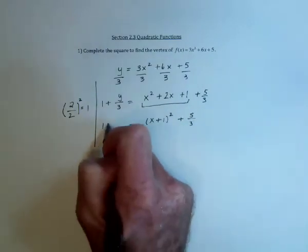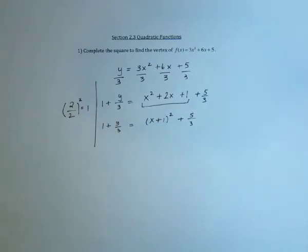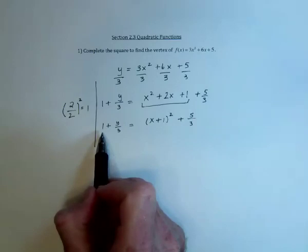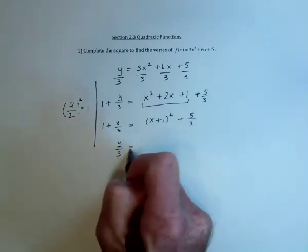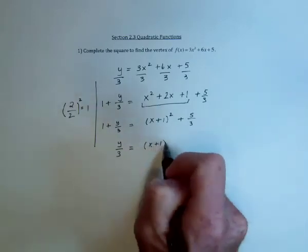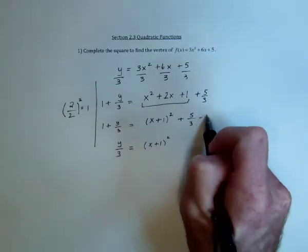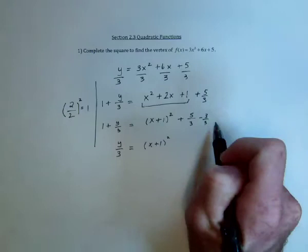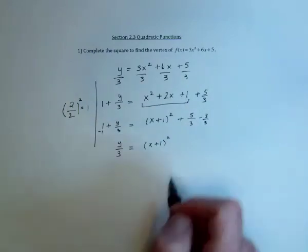And then we've got just two more steps. We need to solve for y. So subtract 1 from both sides to move this over to the right-hand side. So we're going to subtract it from the 5 thirds. If we subtract 1, that's the same thing as subtracting 3 over 3, which is going to leave 2 thirds.